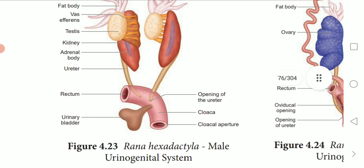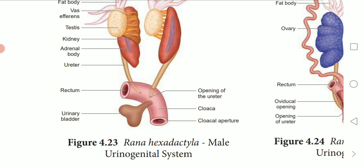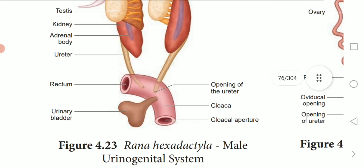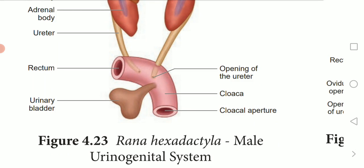The picture you are seeing is the excretory system of frog — specifically the male urinogenital system. The urinogenital system is used for excretion purpose as well as reproductive purpose, that is why it is called the urinogenital system. The use of the excretory system is elimination of nitrogenous waste.